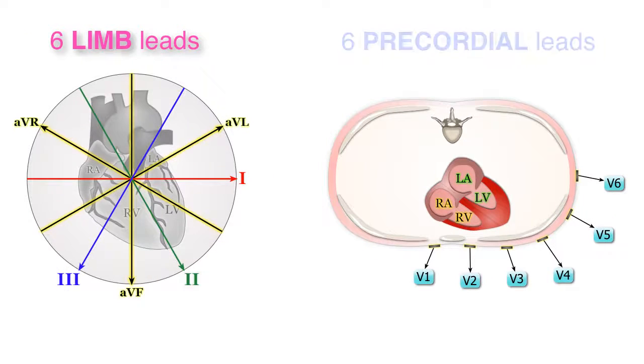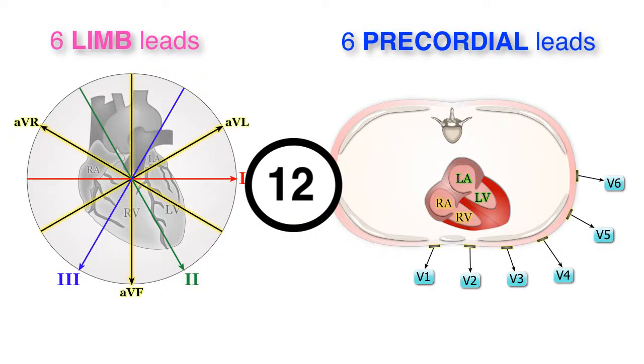And there you have it. Six limb leads and six precordial leads, which together make up the 12 leads of a standard EKG.